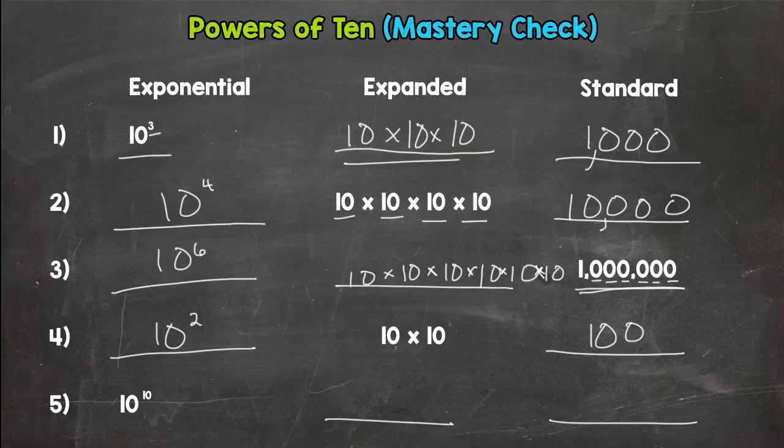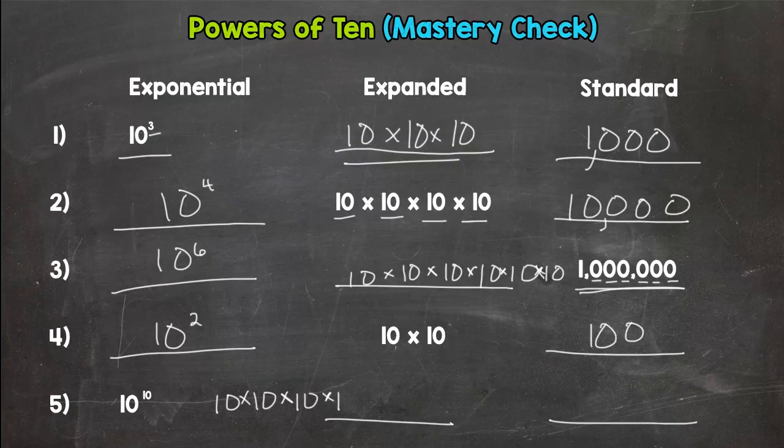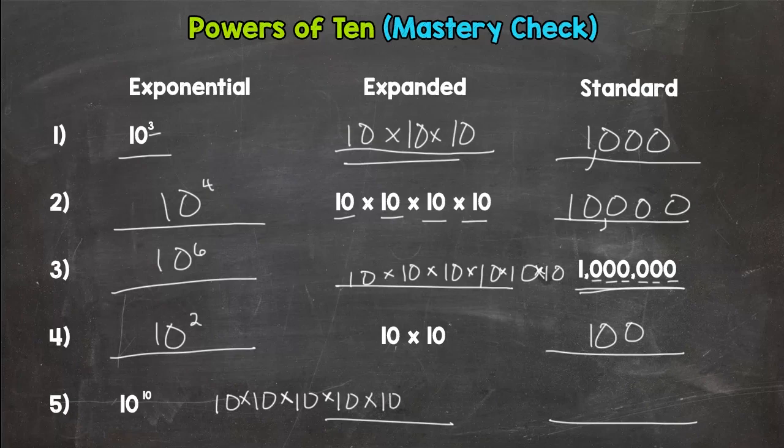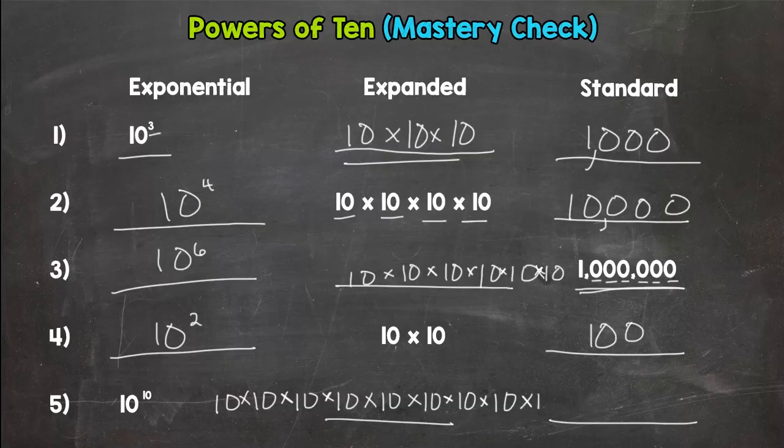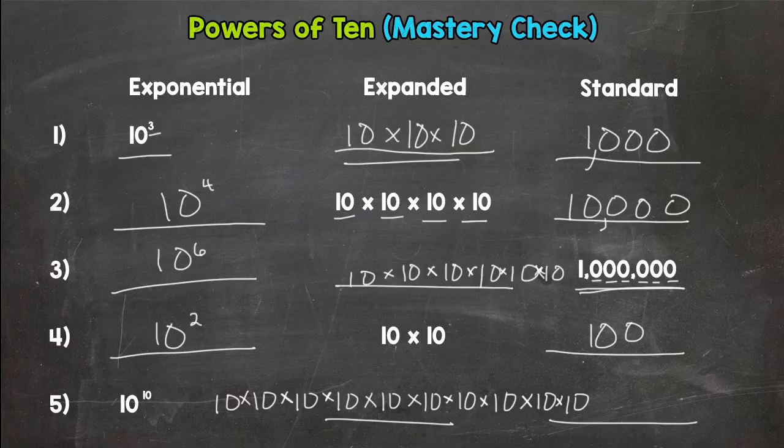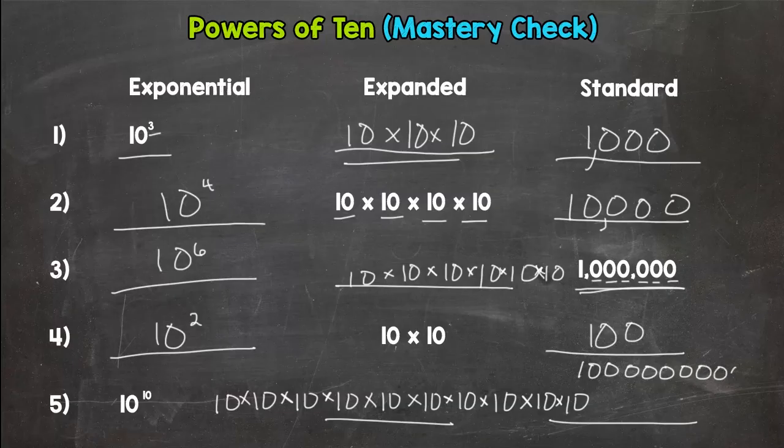And then for number five, ten to the tenth power, ten tens. Bear with me here. How many is that? One, two, three, four, five, six, seven, eight, nine, ten. And ten zeros. One, two, three, four, five, six, seven, eight, nine, ten. And let's put our commas in so it's easier to read this number. And we have ten billion. Ten billion for number five.